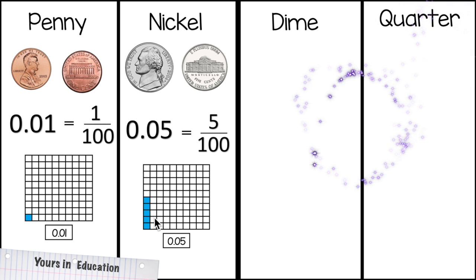Here we have the decimal model. Instead of 1, we have 5 squares shaded, and this is how you write it, 0.05.